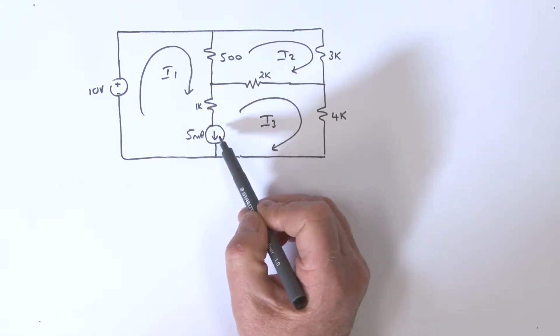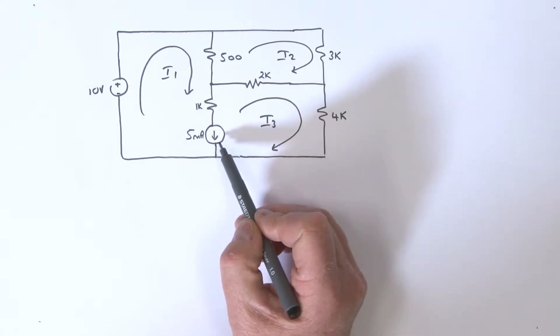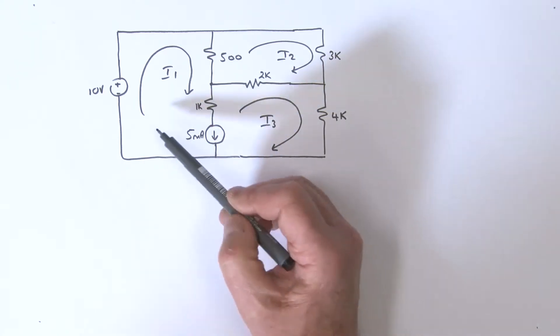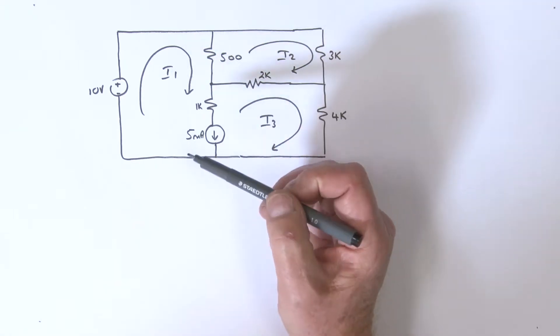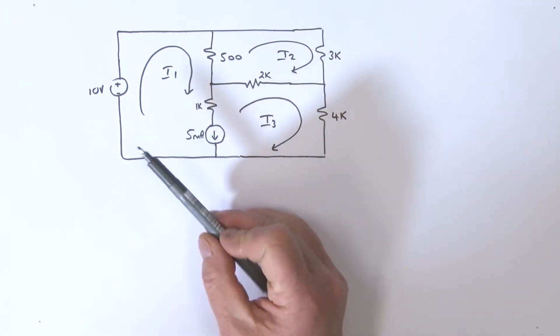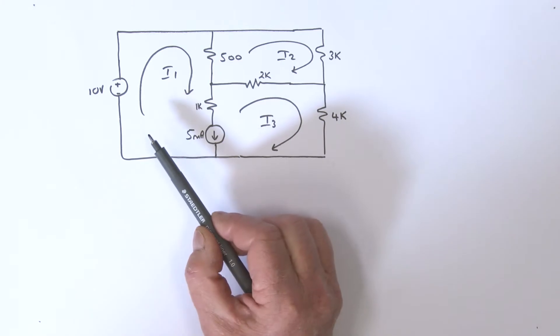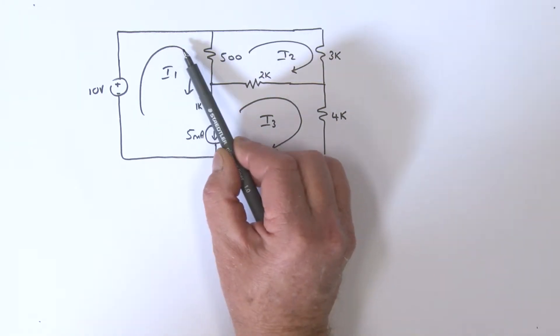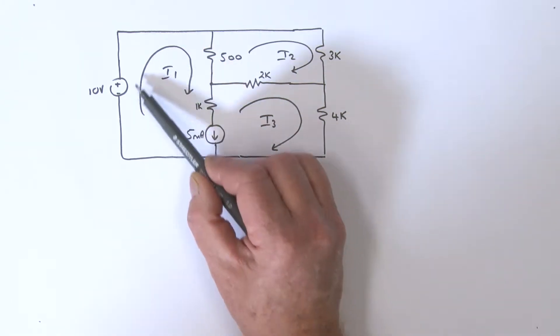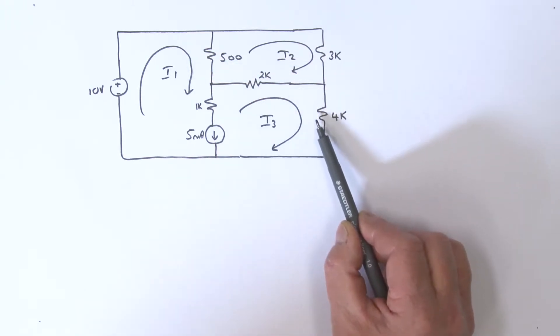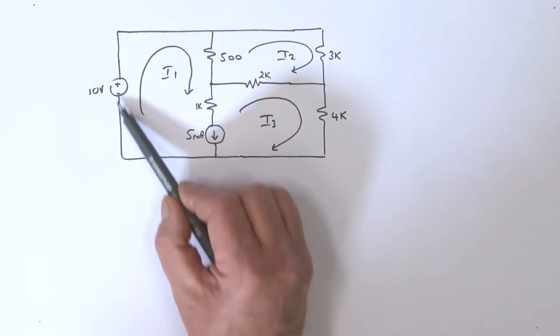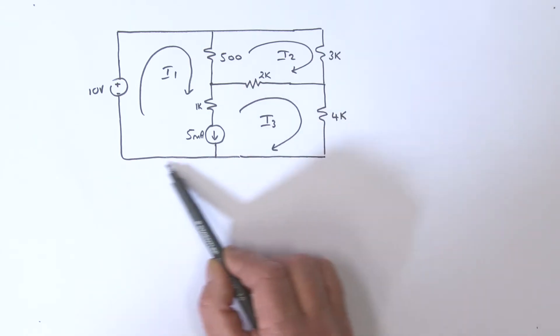Now I do have this current source here - it's a 5 milliamp current source, so I don't know the voltage across it. With mesh analysis, we're really summing the voltages, so the path we're going to traverse is incorporating the i1 mesh and also incorporating the i3 mesh and looping around like so.